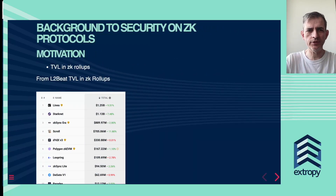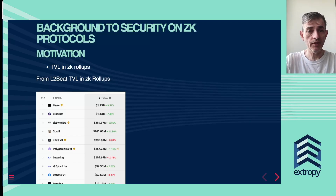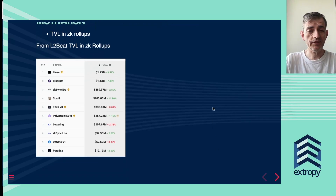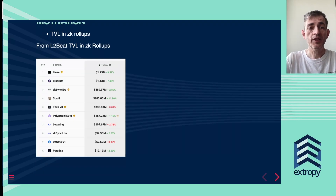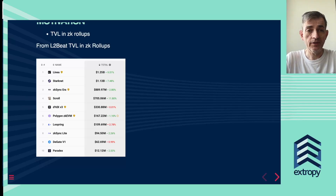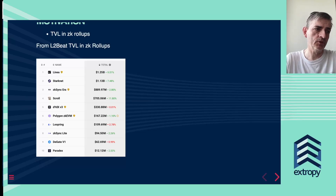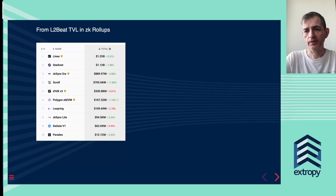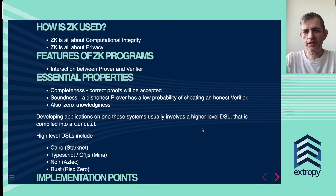To give a bit of background — what's the motivation for this, and why is security potentially a problem? One reason is the value that is available to people who may want to exploit these protocols. There's a table here showing some of the total value locked in different protocols, and you can see there is a great amount there. The potential for hacking can be very large indeed, so we need to be careful when writing applications on these protocols not to leave them open to vulnerabilities and attack by hackers.